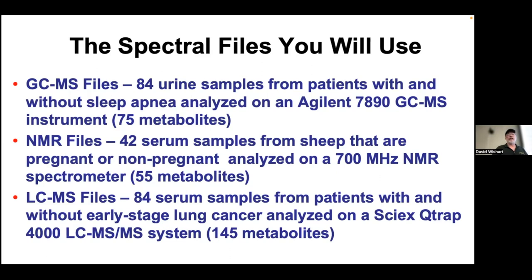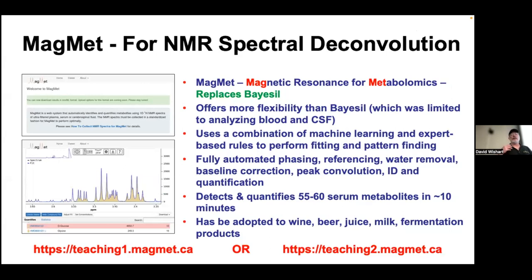This was done with LC-MS using a smaller study to keep it simpler. It measures about 145 metabolites using a Q-Trap 4000. All these instruments are either on the eighth floor or the 700 MHz NMR is on the third floor. For the software access, you can use either teaching1.magnet or teaching2.magnet — that's assigned to you, so make sure you go to the correct one.